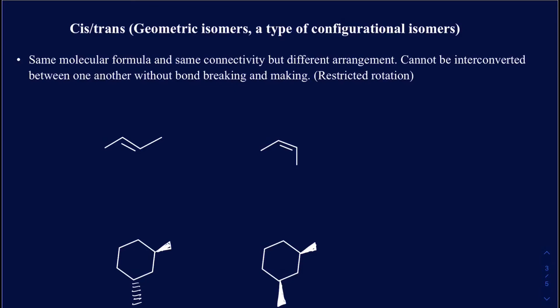In this video we're going to be talking about the cis-trans isomers, also called geometric isomers, and it's going to be a type of configurational isomer, also called stereoisomers. Another type of configurational isomer is optical isomers — we're not going to be talking about those in this particular video. We're only going to be focusing on cis and trans in this particular session.